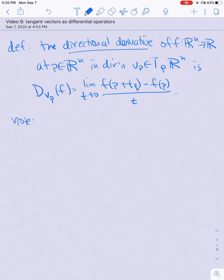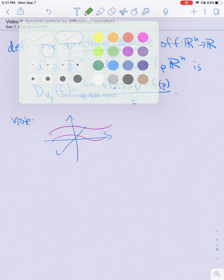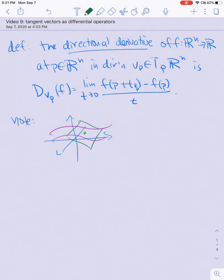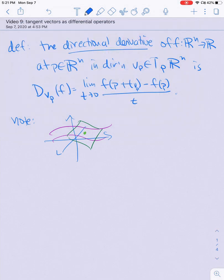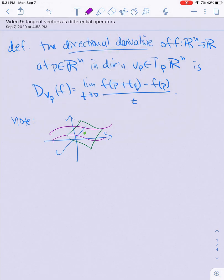For example, if f were a function from R^2 to R and it had some graph, you would take the point p and then the plane that was tangent to the graph of f at the point (p, f(p)), and you would pick some line—this is the line p plus tv in R^n—and take its image.